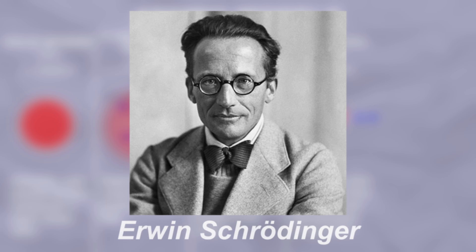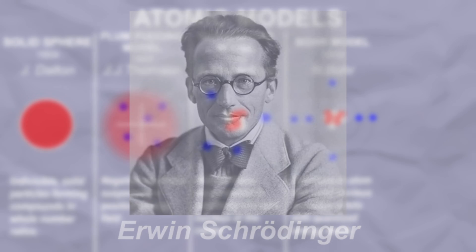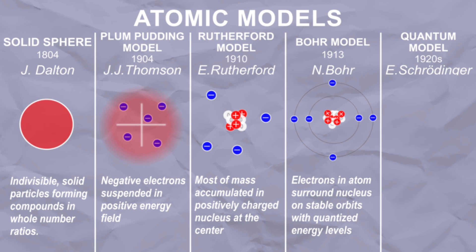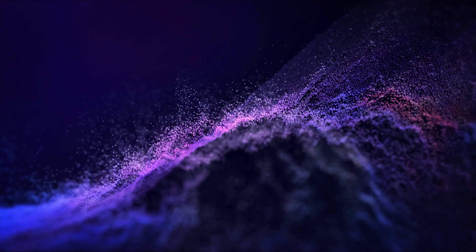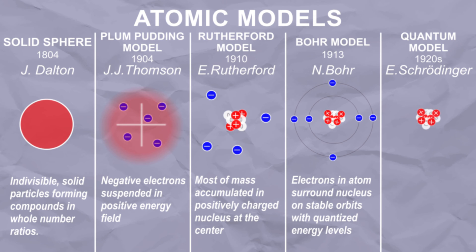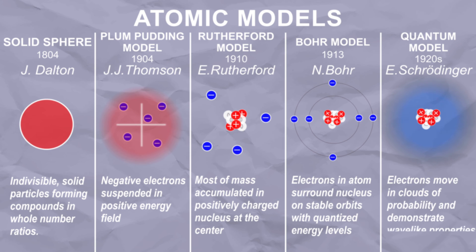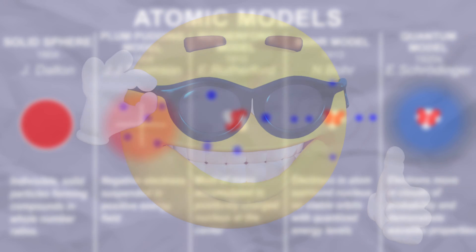But it couldn't be that simple, and quantum theory had to complicate everything. In the 1920s, Schrödinger said: what if the electron isn't a point, but a wave? There is this entire concept of wave-particle duality, which deserves its own video. What is important to atomic theory is that electrons, instead of being at fixed orbits, are now in clouds of probability — or orbitals. We don't exactly know where or exactly when, but we know they are there. Probably more there than there.